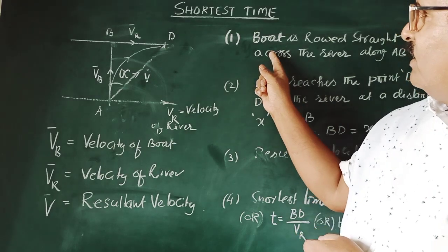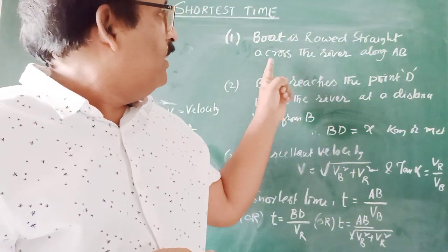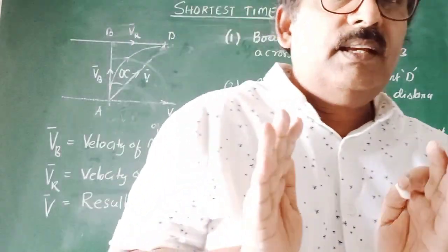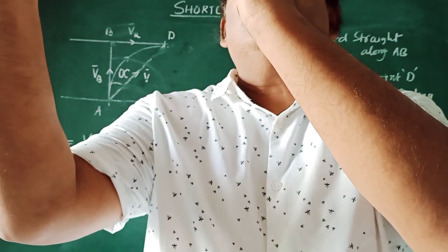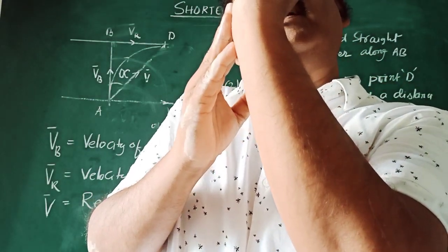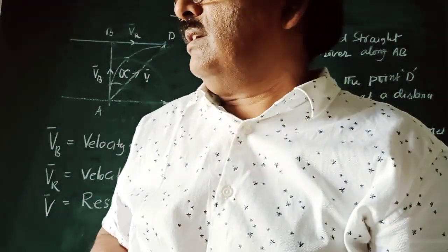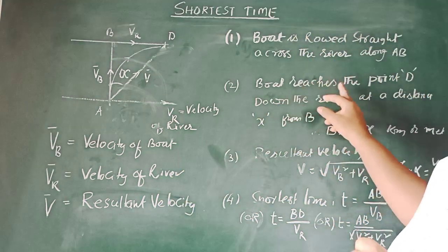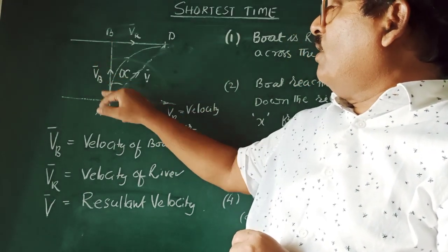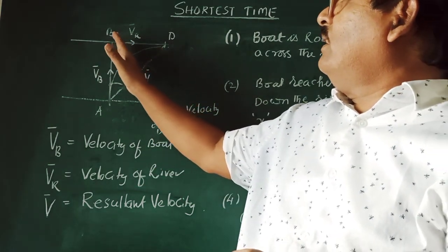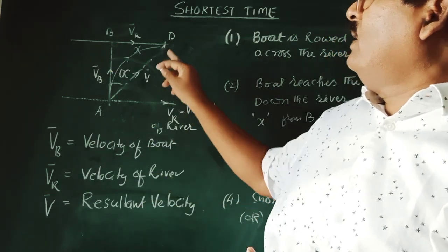The important points in the shortest time: the boat is rowed straight across the river. Because of the river's velocity, the direction of the boat gradually shifts. The velocity of the boat and velocity of the river are added, so the resultant is along the hypotenuse of the right triangle. The boat therefore reaches point D, which is downstream at a distance X from the point exactly opposite.